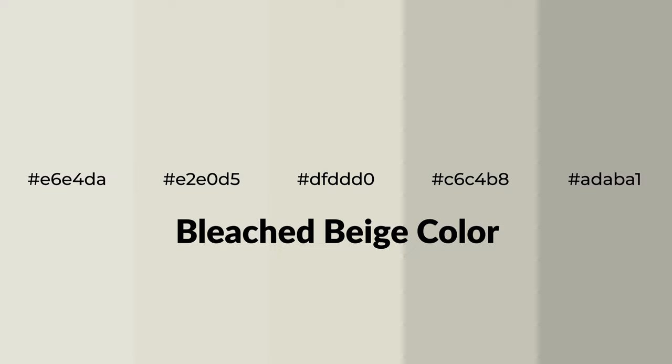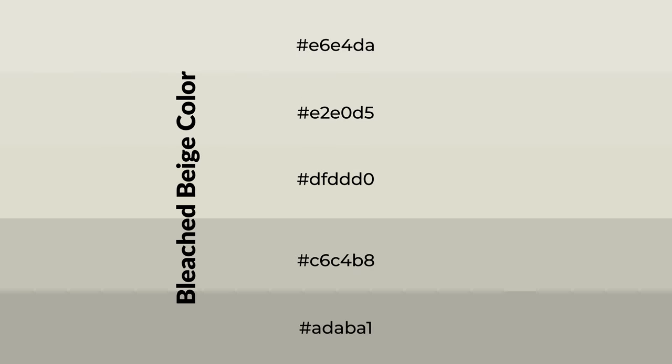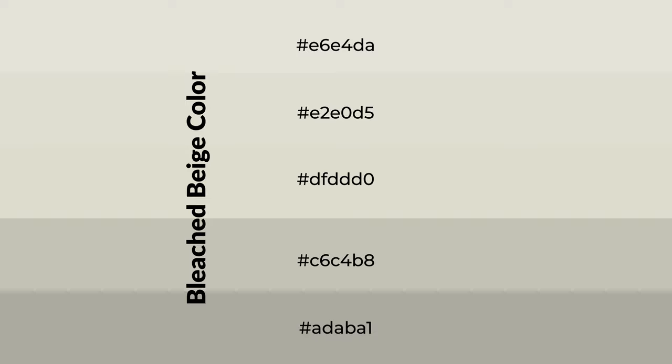Warm shades of bleached beige color with gray hue for your next project. To generate tints of a color, we add white to the color. Tints create light and exquisite emotions. To generate shades of a color, we add black to the color, and it is used in patterns, 3D effects, and layers. Shades create depth and drama.